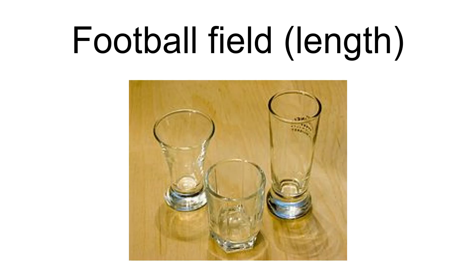A football field is often used as a comparative measurement of length when talking about distances that may be hard to comprehend when stated in terms of standard units. An American football field is usually understood to be 100 yards, 91 m, long, though it is technically 120 yards, 110 m, when including the 10 yd, 9.1 m, long end zones. The field is 160 feet, 53 yd, 49 m, wide.